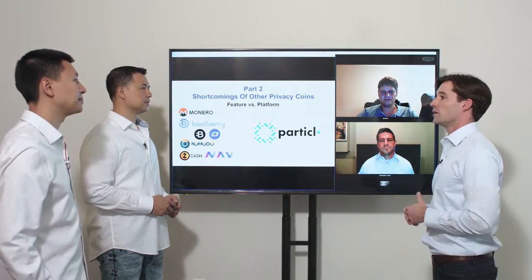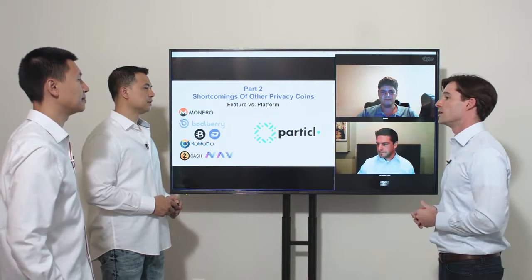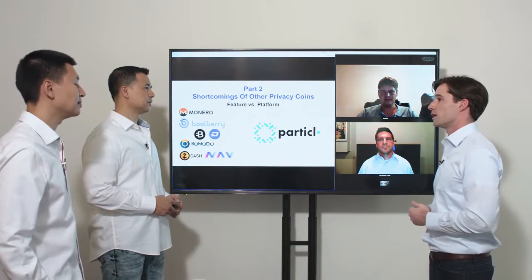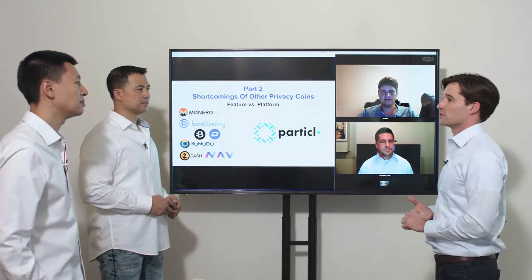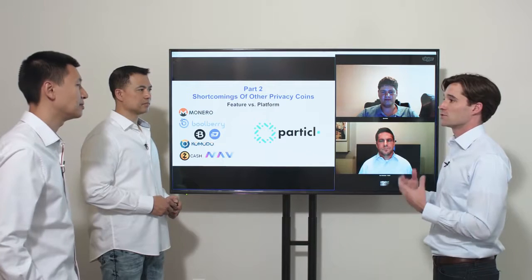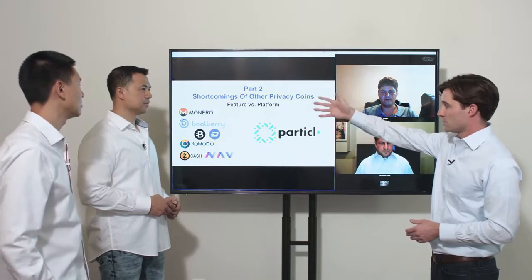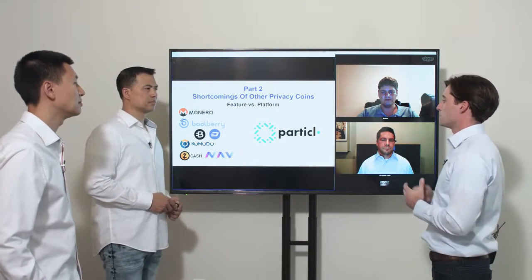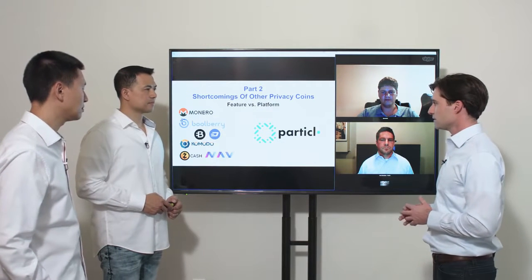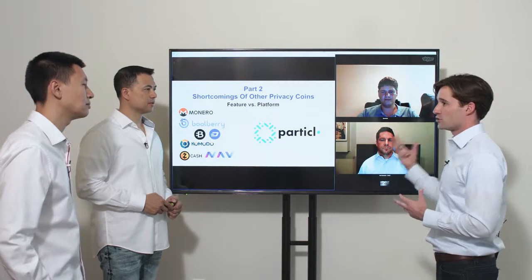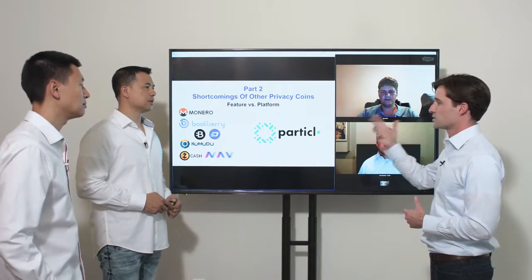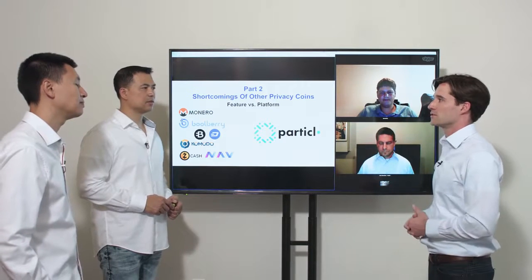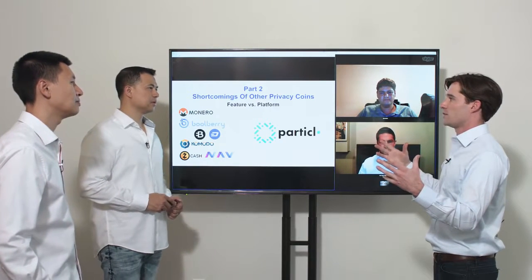If you're a one-trick pony and just do one thing very well, then a larger network comes in and takes that feature, and the longevity of your project might be damaged. While single-feature coins are important for fungibility and store of value, they're at risk. With the Particle project, the team wants to provide a use case platform to actually spend and use the privacy — whereas with some of these coins, you can use them on darknet markets, but that's about the extent of how they're used.